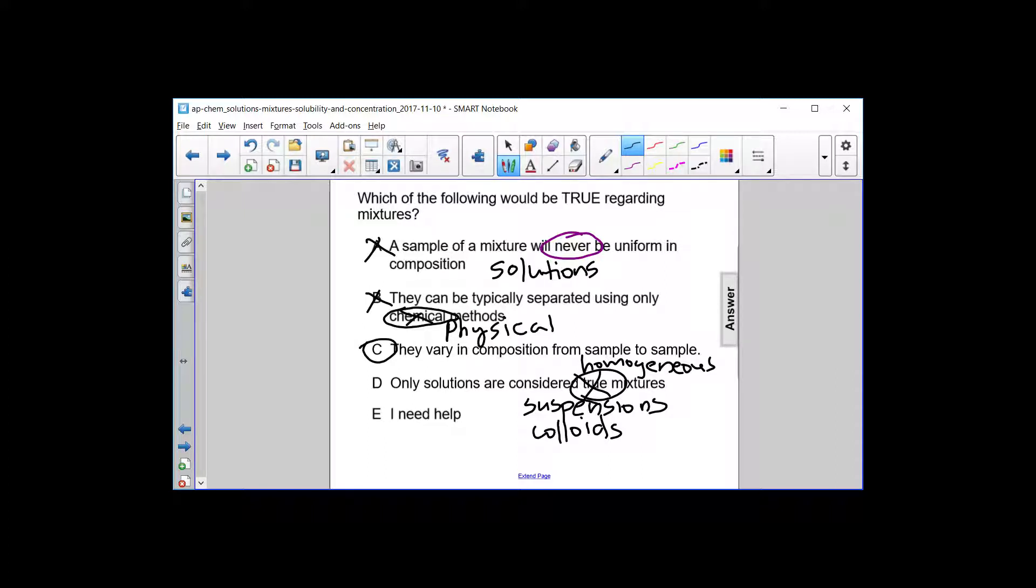But even in a homogeneous solution of salt water, one sample of salt water from the Atlantic Ocean will have a different salt composition than, say, a salt water sample from the Atlantic Ocean. They vary in composition from sample to sample because they don't obey the law of definite composition. So the answer is C.